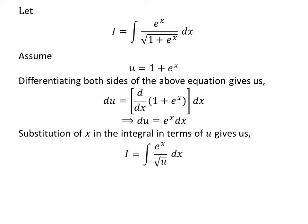Substitution of 1 plus exponential of x by our assumed value gives us i is equal to integral of exponential of x upon square root of u. Replacing exponential of x times differential of x by its value differential of u gives us i is equal to integral of 1 upon square root of u with respect to u.